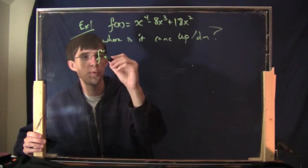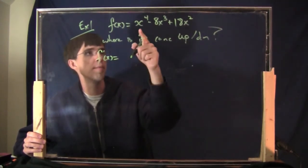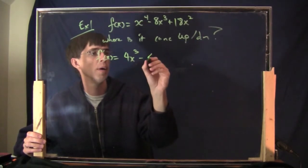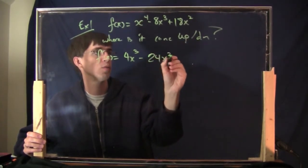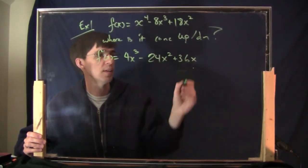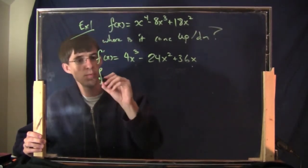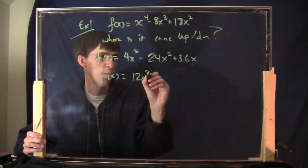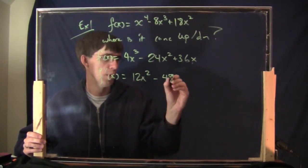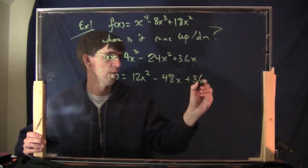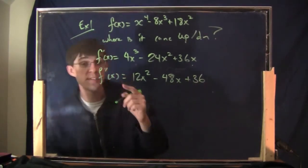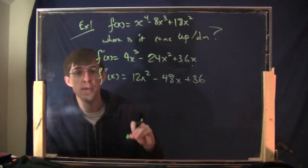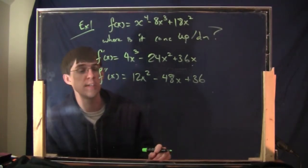First we'll find the second derivative, which will involve finding the first derivative first. The first derivative is 4x cubed minus 24x squared plus 36x. The second derivative — you just do the derivative again — is 12x squared minus 48x plus 36. We're going to do that same kind of chart we did with the increasing/decreasing business.